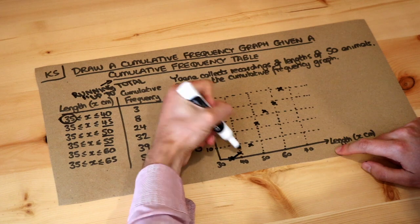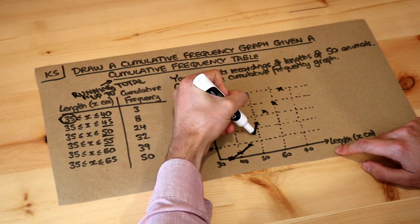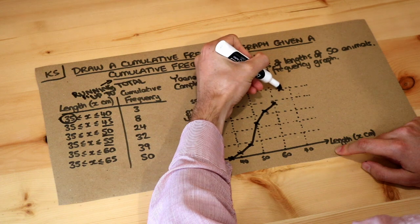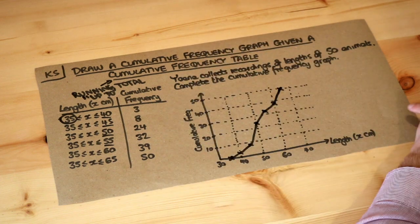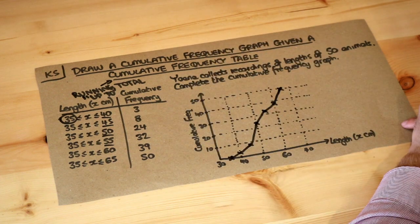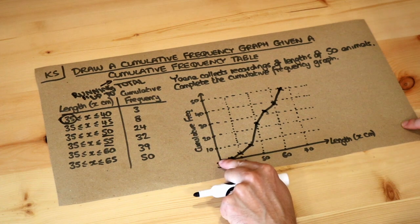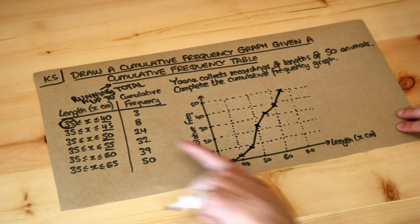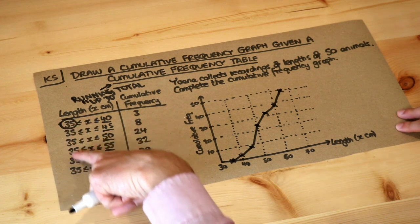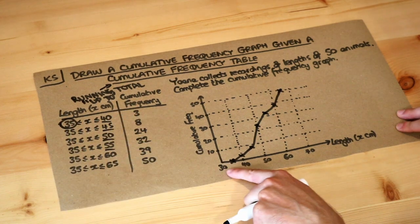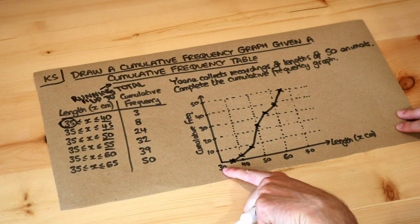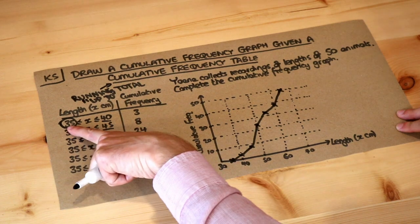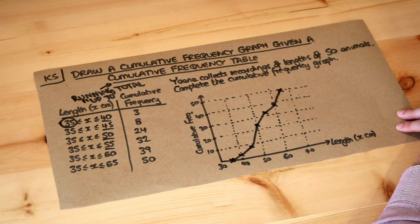I'm just going to do straight lines between each of them, but a curve will also be fine, and that will be our completed cumulative frequency graph. They usually start at this corner here, but that would only be if the length on the left is consistent with the starting value — which it's not, since the x-axis starts at 30 centimetres but our data starts from 35 centimetres.